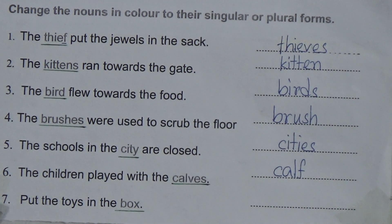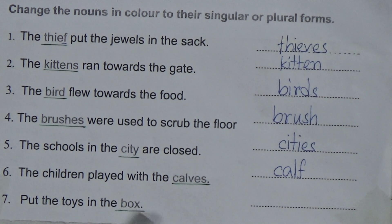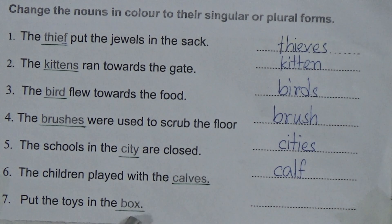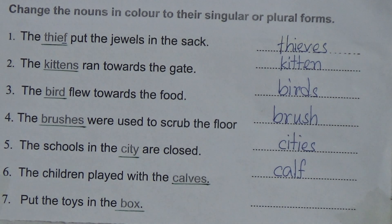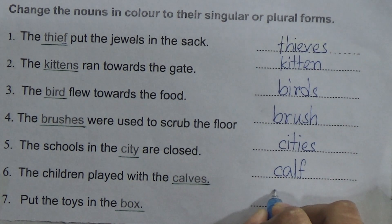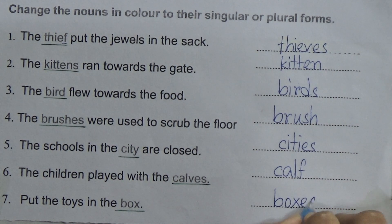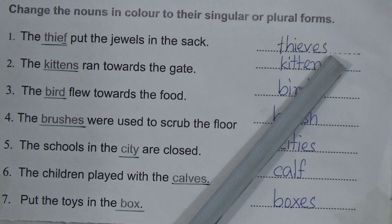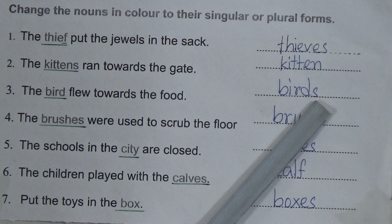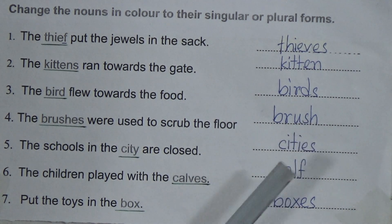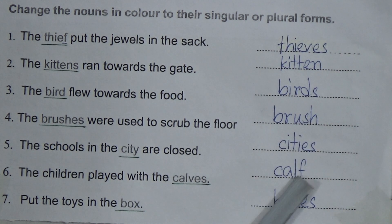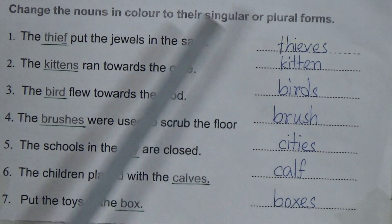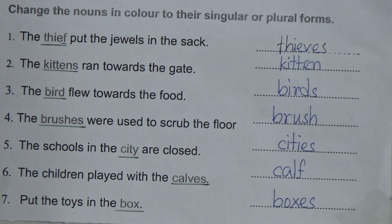Number seven: put the toys in the _box_. When a noun ends in X, we add ES to make it plural. So box becomes boxes — B-O-X-E-S. So the answers for Exercise 5 are: number one — thieves, number two — kitten, number three — birds, number four — brush, number five — cities, number six — calf, number seven — boxes.